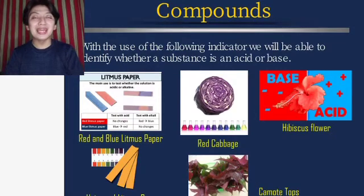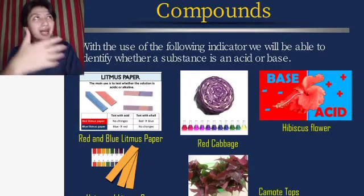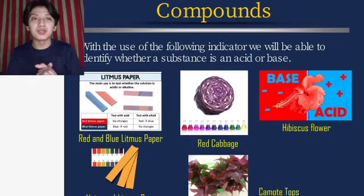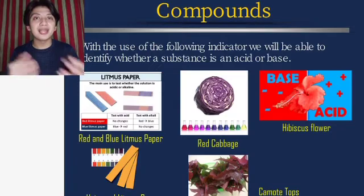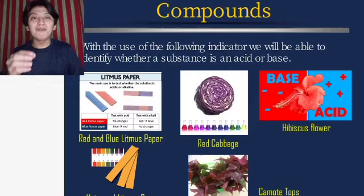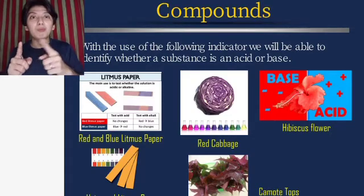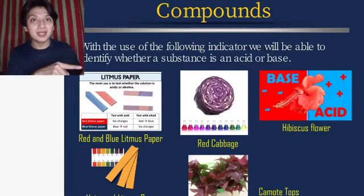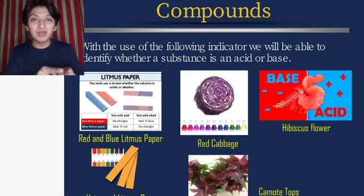Acids and bases can be detected using indicators. With litmus paper: if a red litmus paper turns blue, the substance is a base; if a blue litmus paper turns red, the substance is acidic.